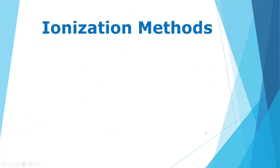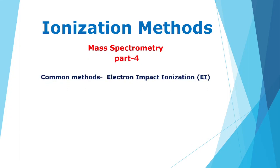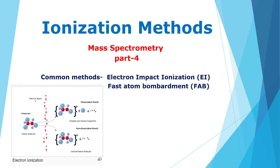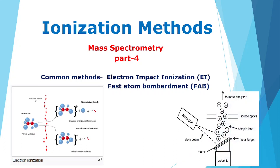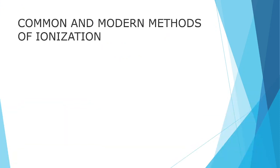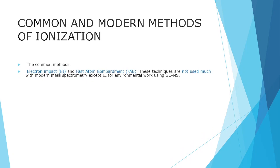Dear students, today I'm going to tell you about ionization methods for mass spectrometry, and this is the fourth part of my lecture on mass spectrometry. Common methods are electron impact ionization and fast atom bombardment. These two techniques will be explained later on. First of all, introduction to these methods.